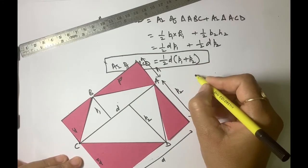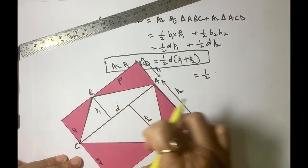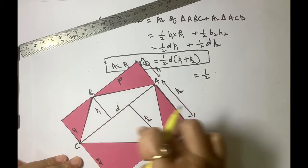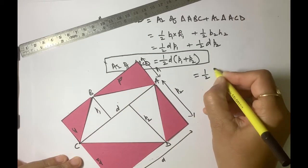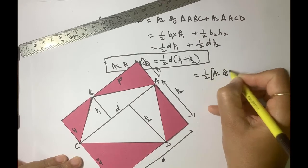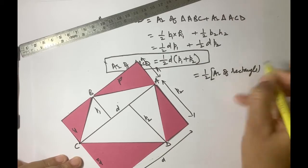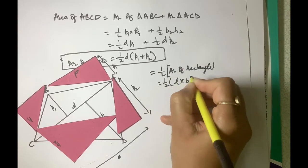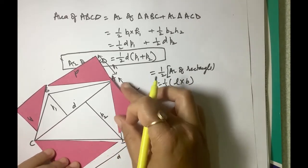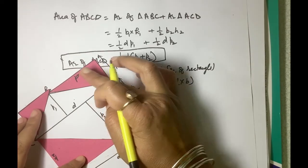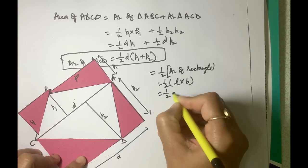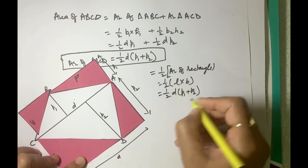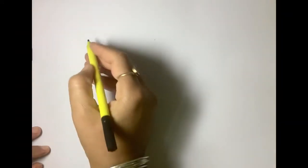Here what we get? Because these are two quadrilaterals, therefore, if we want area of this quadrilateral, that means half of area of rectangle. And area of rectangle is length into breadth, length is D and breadth is P1 plus P2.